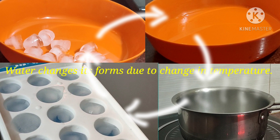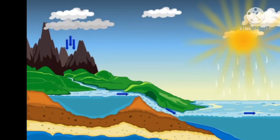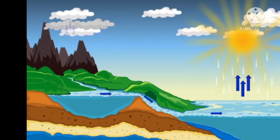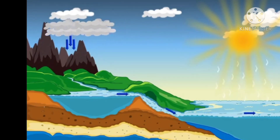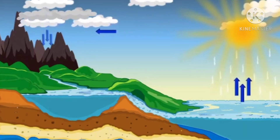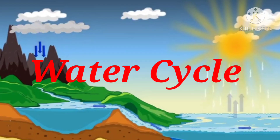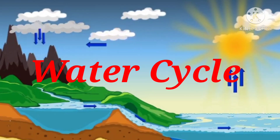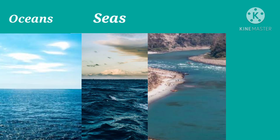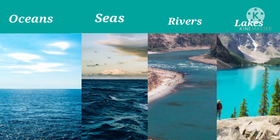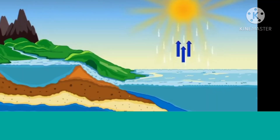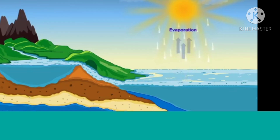Dear children, this process of conversion of water vapour into its liquid form occurs in nature on a large scale, and this is called the water cycle. In the water cycle, water from oceans, seas, rivers, and lakes changes into water vapour as it evaporates due to the heat of the sun.